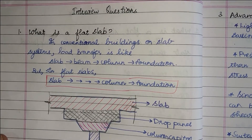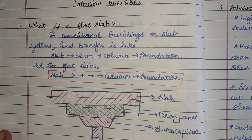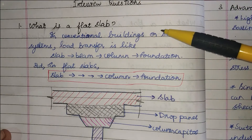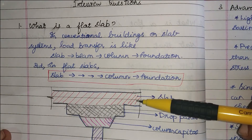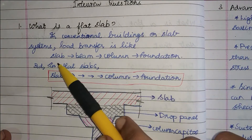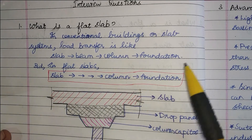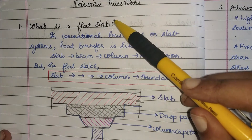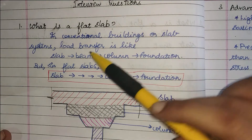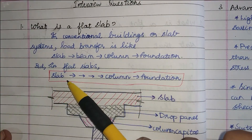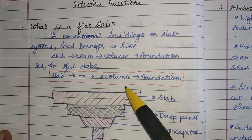The first question is: what is a flat slab? In conventional buildings, the load transfer goes from the slab to the beam, then to the column, and then to the foundation. When we use a flat slab, this beam step can be avoided and the load from the slab can be directly transferred to the columns.